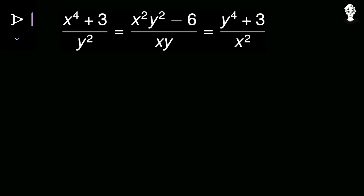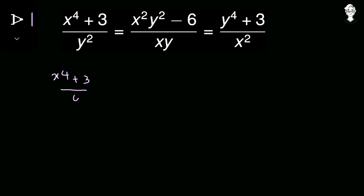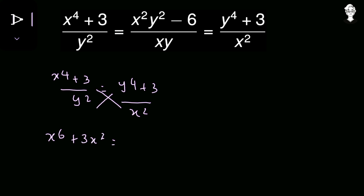We can see that these three expressions are equal to each other, so we can compare two of them. We'll start by comparing the first and the last: x to the power 4 plus 3 upon y squared equals y to the power 4 plus 3 upon x squared. After cross multiplication, we get x to the power 6 plus 3x squared equals y to the power 6 plus 3y squared.